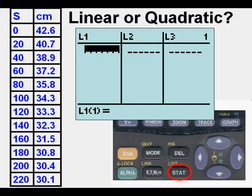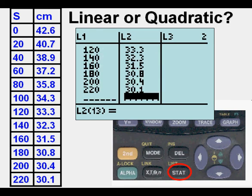So if we go to stat and press enter, we can go ahead and enter all the independent variable data under L1 and the dependent variable data under L2, and we have 12 points here.